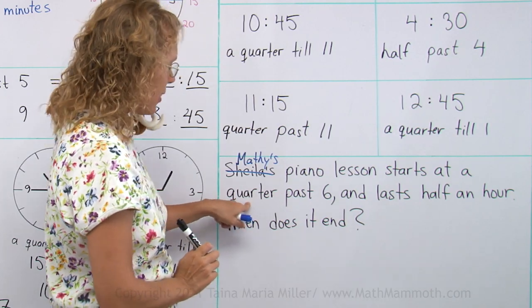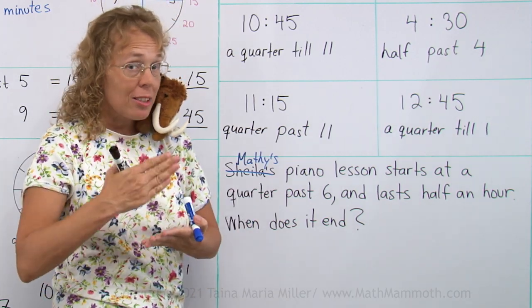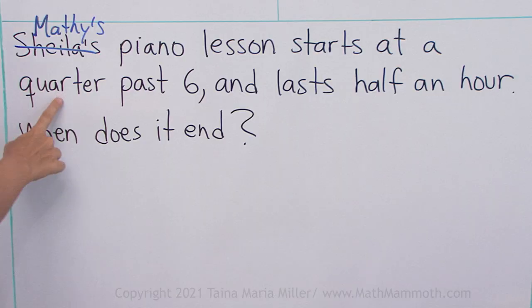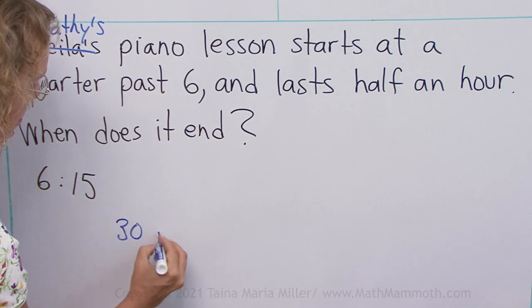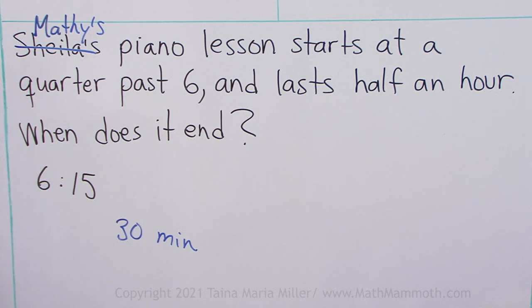Let's change this time to the hours and minutes way. Quarter past, quarter is fifteen minutes. So this will be 6:15. Then it lasts thirty minutes. Half an hour is thirty minutes.